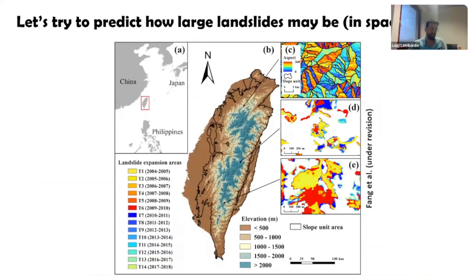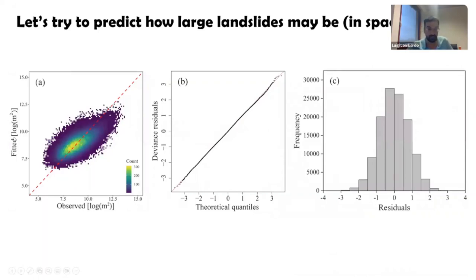For this reason, I proposed another type of model: instead of counts, looking at landslide areas. We compute the sum of all landslide areas or surfaces per slope, then create an AI trained to predict how landslides may end up being in terms of their planimetric extent — how large they are. I consider myself privileged to have supervised a Chinese student with whom we worked on this topic — predicting how large landslides may be while still respecting the idea of space-time modeling.